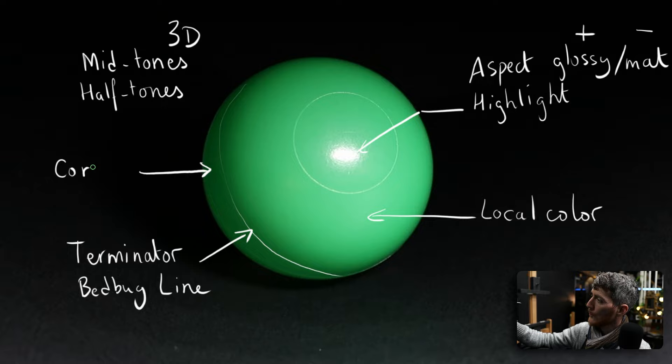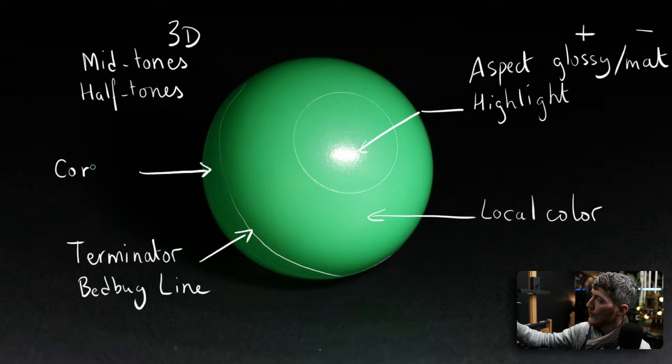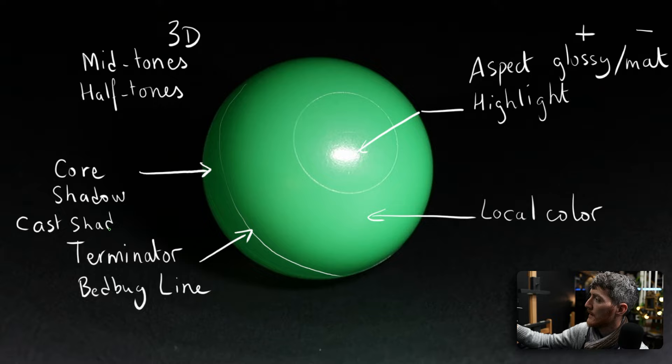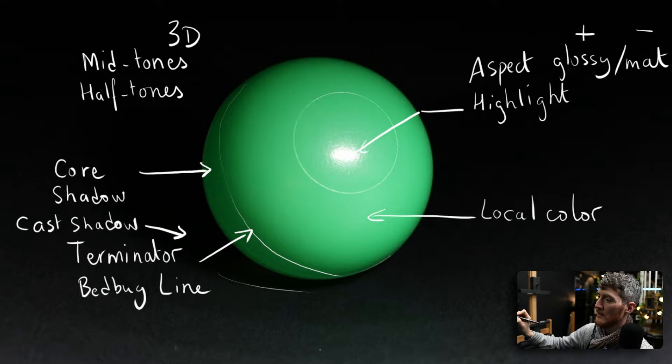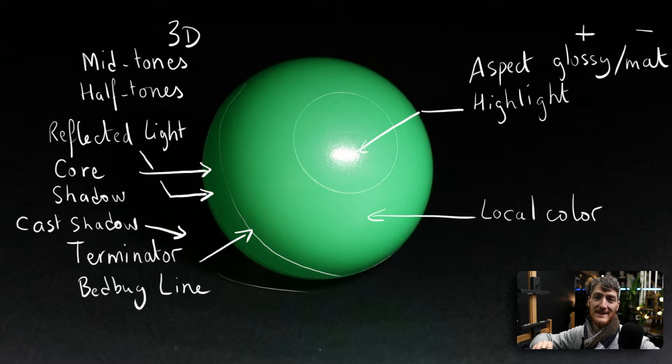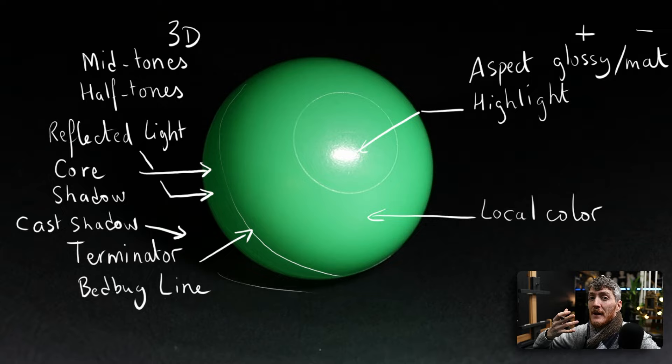After that, within the shadow you also have the core shadow, which is the shadow visible on the surface of the object, and you also have the cast shadow, which is the shadow cast on the surrounding surface — the ground in this case. Within the core shadow you also have reflected lights, whose color and appearance really depends on the type of surface the light is reflected from.